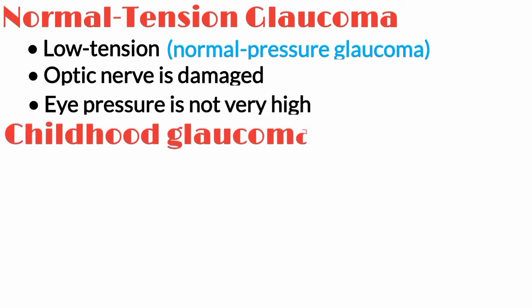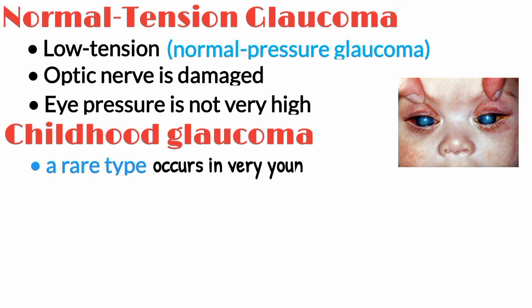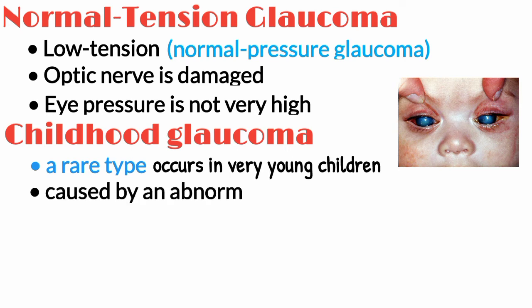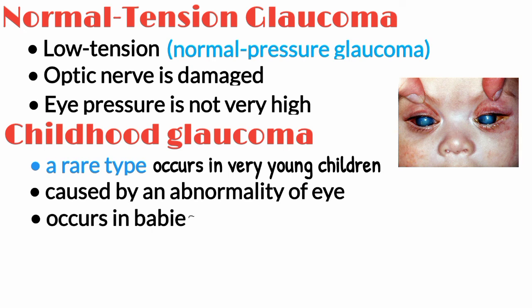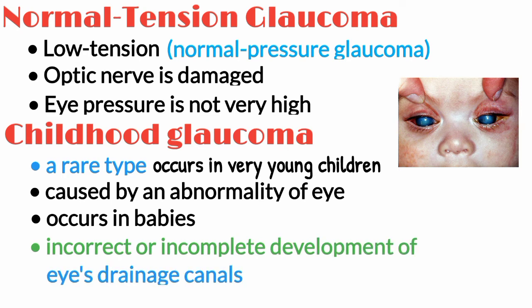Childhood glaucoma, also known as congenital glaucoma, is a rare type that occurs in very young children and is mainly caused by an abnormality of the eye. This type occurs in babies when there is an incorrect or incomplete development of the eye's drainage canals during the prenatal period.